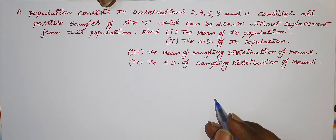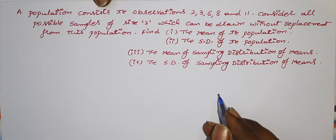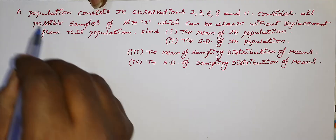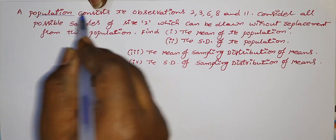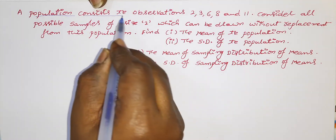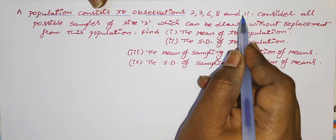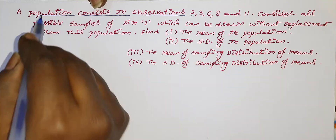Hi everyone, welcome back to our channel. In this video I will give an example on sampling distribution. The statement of the given problem: a population consists of the observations 2, 3, 6, 8, and 11. What is the mean?